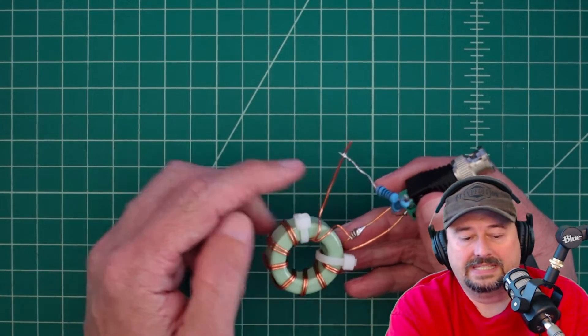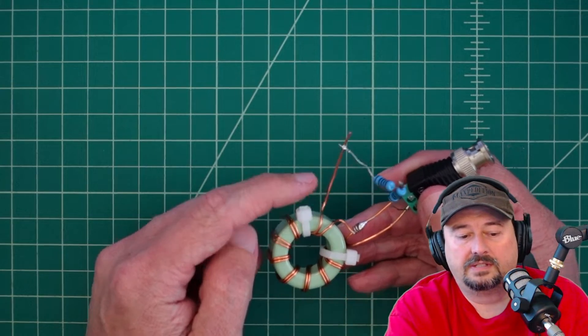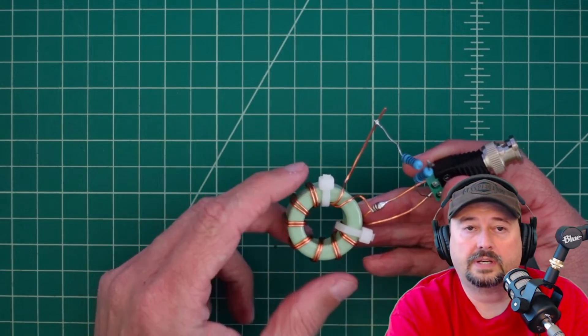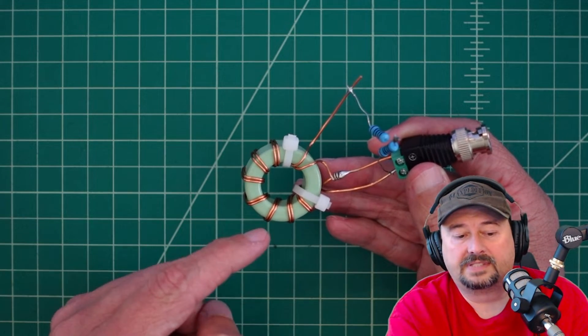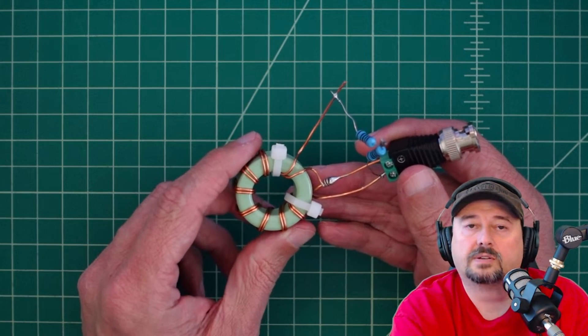So what we've used is an 18 gauge enamel coated copper wire. And then if you count them 1, 2, 3, 4, 5, 6, 7, 8, we have 8 turns on here.